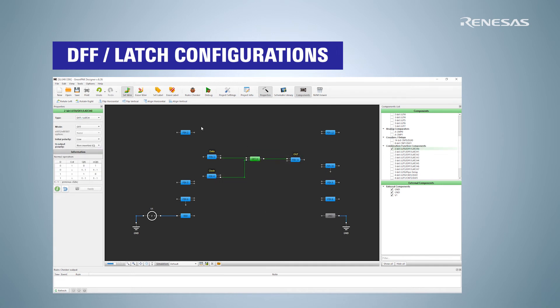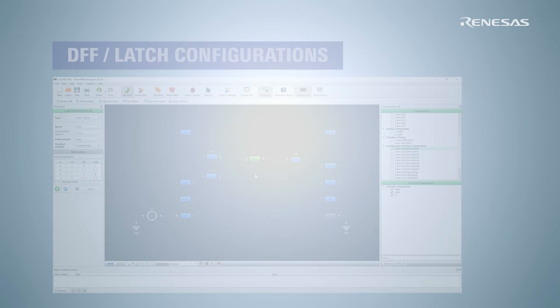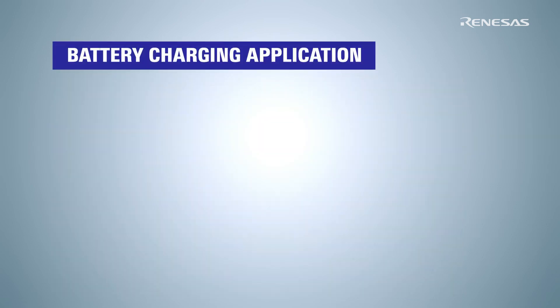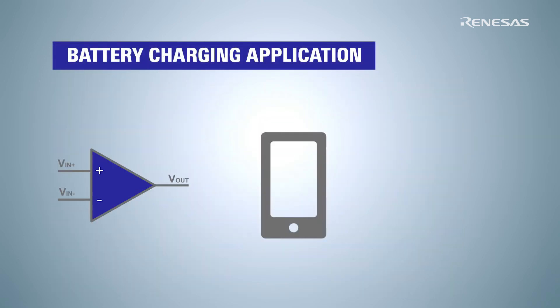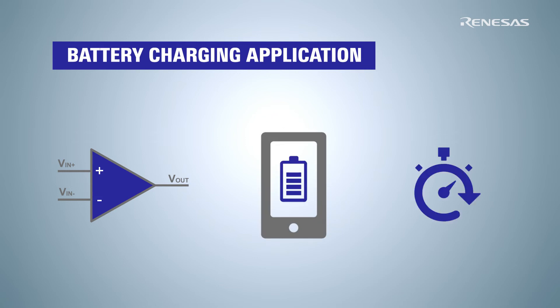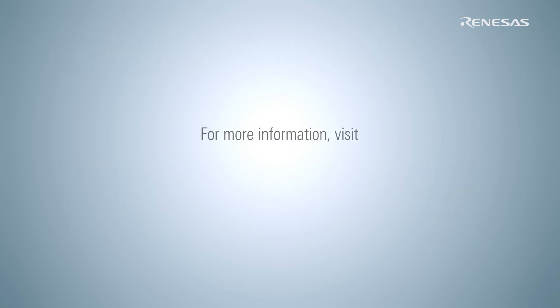GreenPack ICs have 4 to 21 DFF latch macro cells. You can use them, for instance, to save and update data from the analog comparator that measures battery charge each second. It can significantly reduce the power consumption of your device.